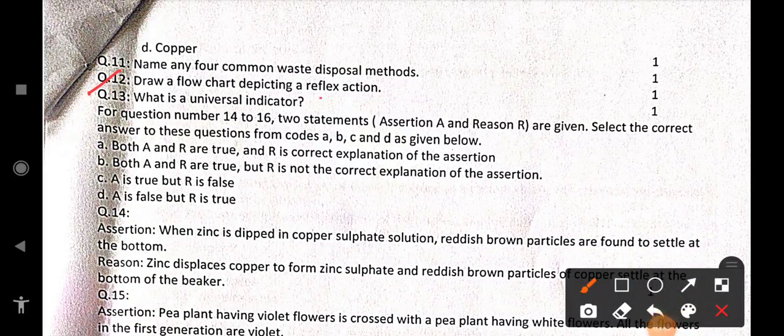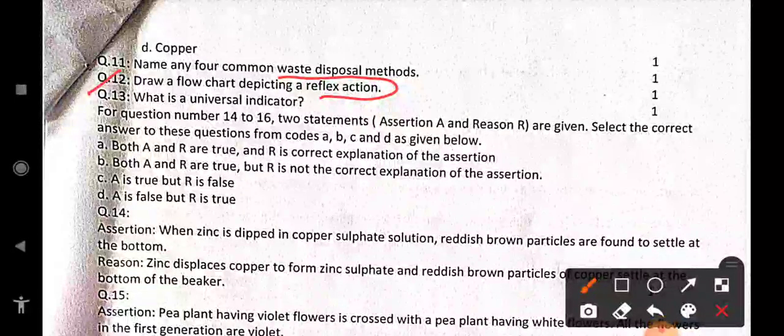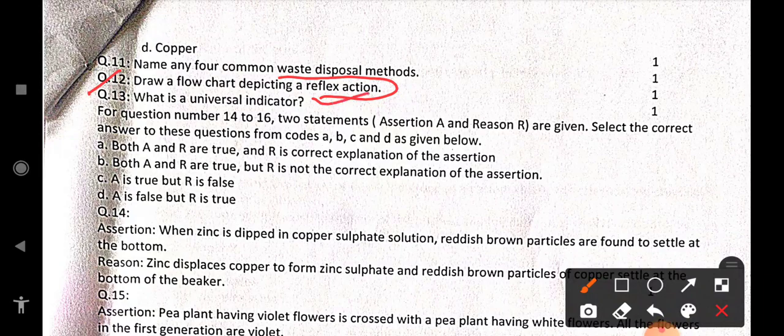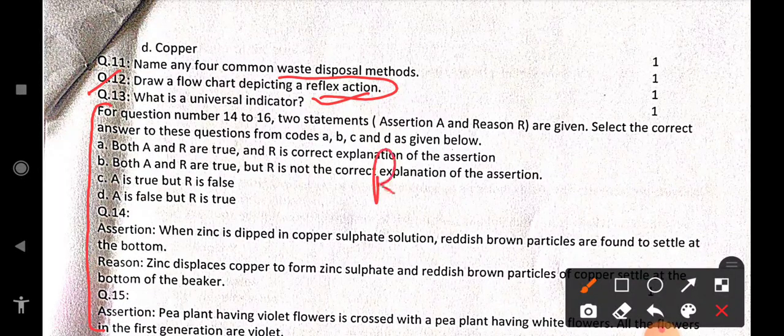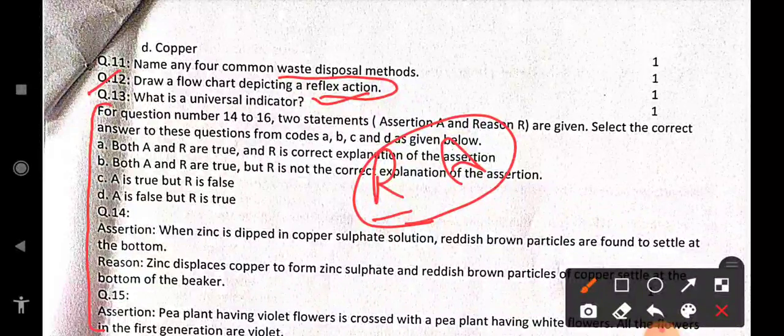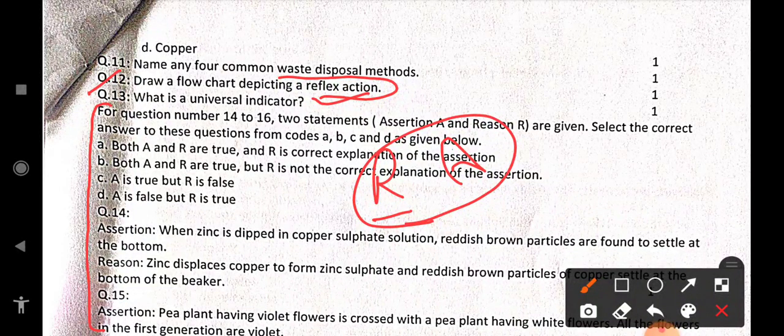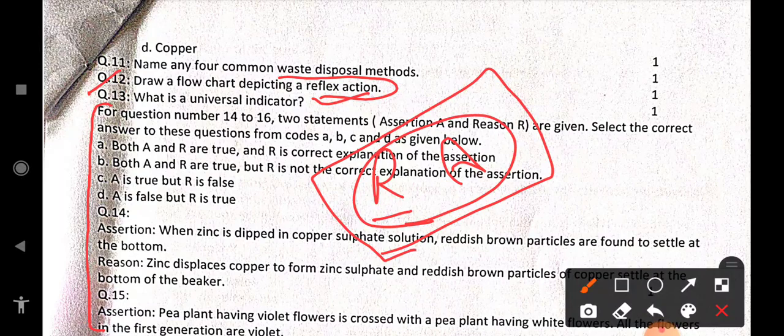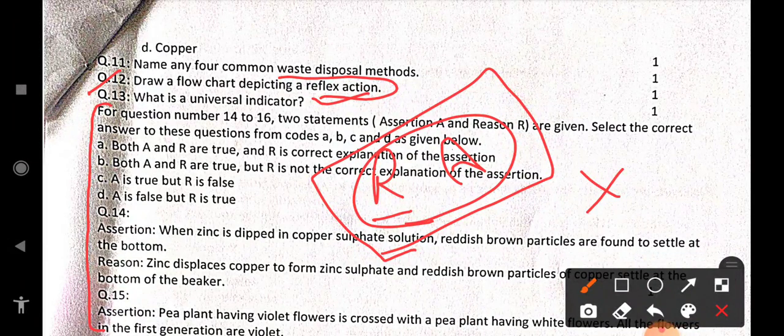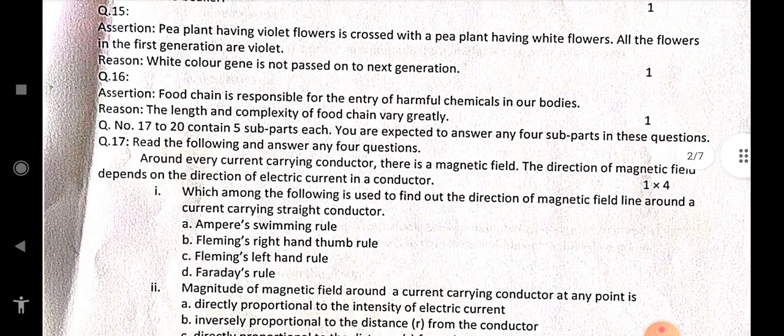Draw a flow chart depicting a reflex action. What is a universal indicator? This is also a long type. After 14 to 16 questions, they are from reasoning and assertion. I am sure this was not a concept in the beginning. It was not before. In any school, they might be able to understand these questions. So it will take you time to understand how to answer these questions. In my opinion, it would be better to leave these four to five questions over there. So it would be better to leave these three questions. So we will do it from 17.